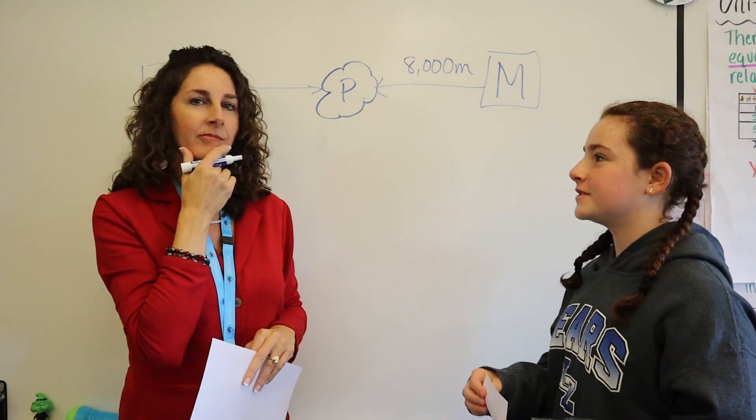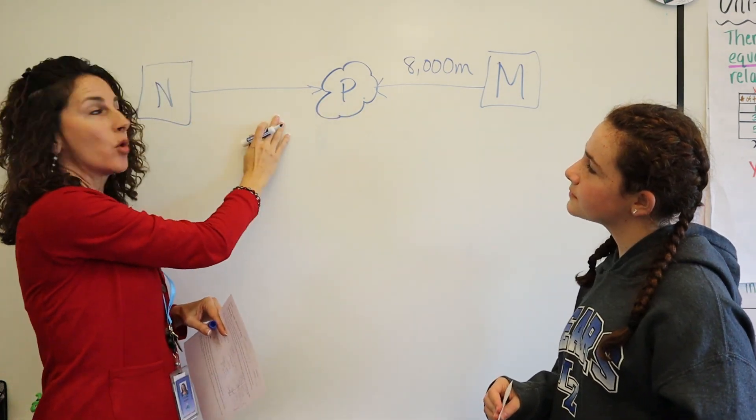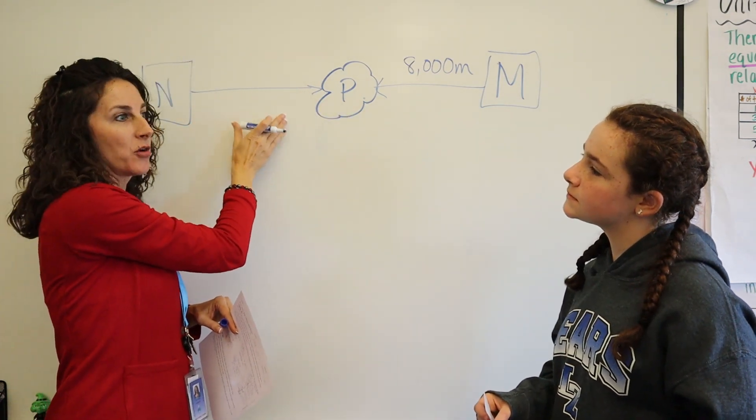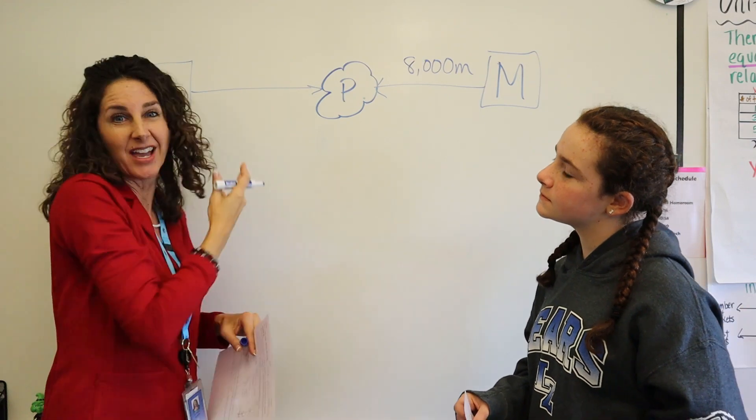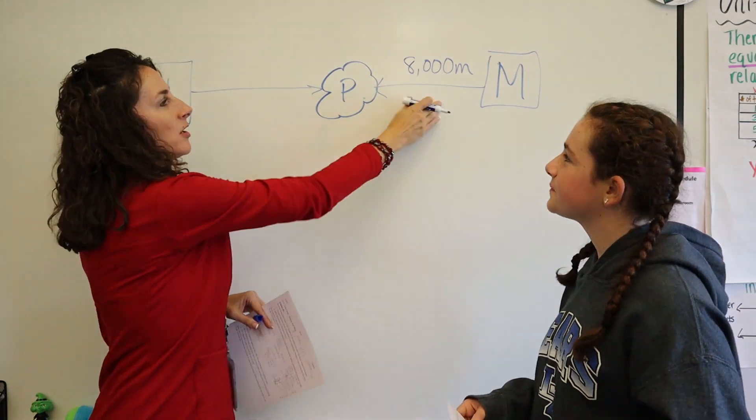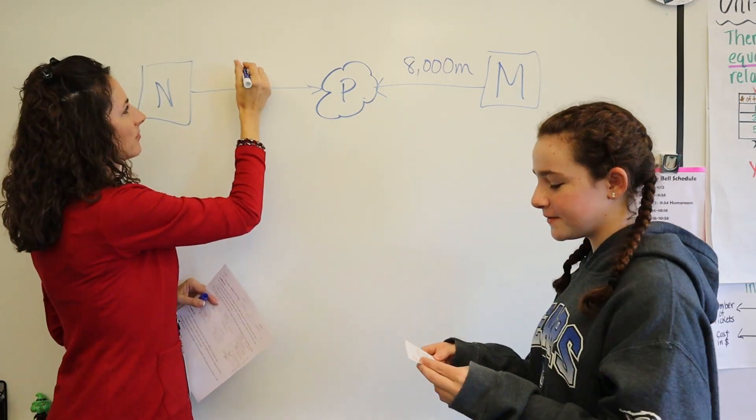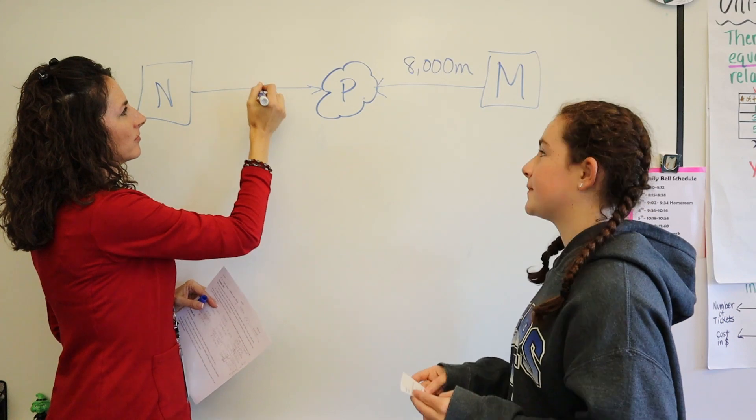What other information do you think you need? I need to be able to compare the distance from Mai to the park to the distance to Noah. So I need to know how far Noah lives from the park. And I think I've already justified why. So why do you think you need to know that? So that I can compare the two and see who lives farther. So Noah lives 1 kilometer farther away from the park than Mai does.